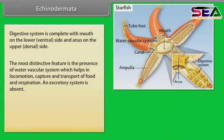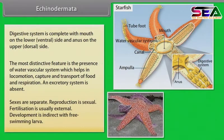The most distinctive feature is the presence of a water vascular system, which helps in locomotion, capture and transport of food, and respiration. An excretory system is absent. Sexes are separate. Reproduction is sexual; fertilization is usually external. Development is indirect with free-swimming larvae.